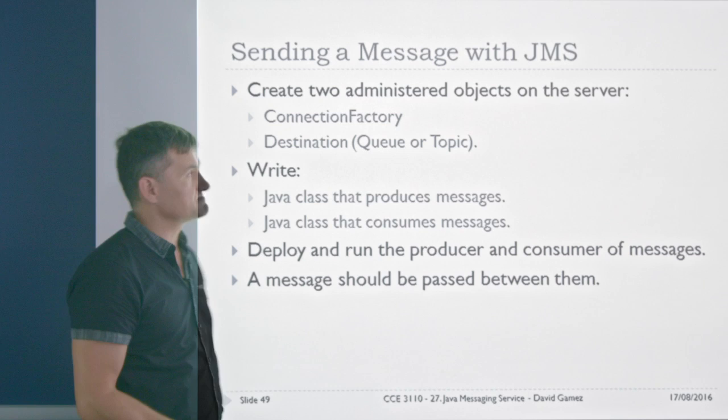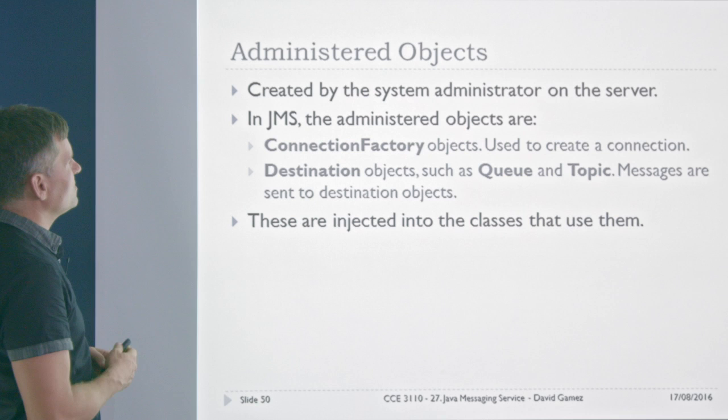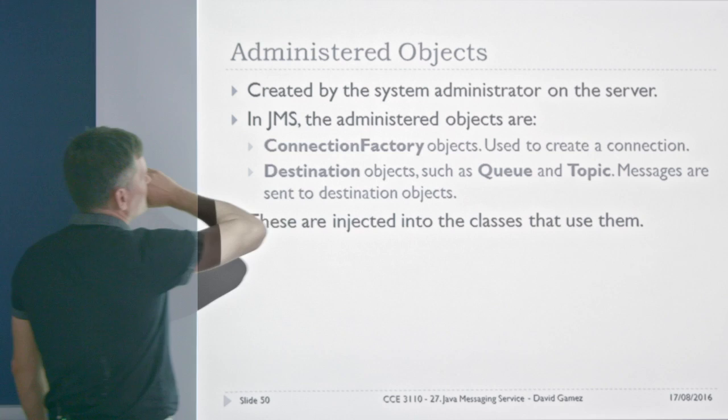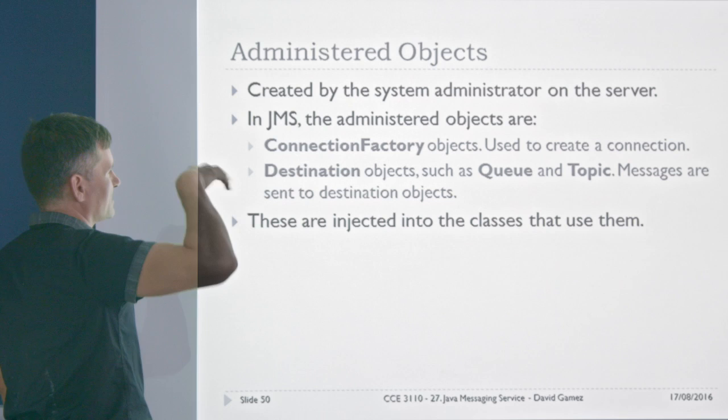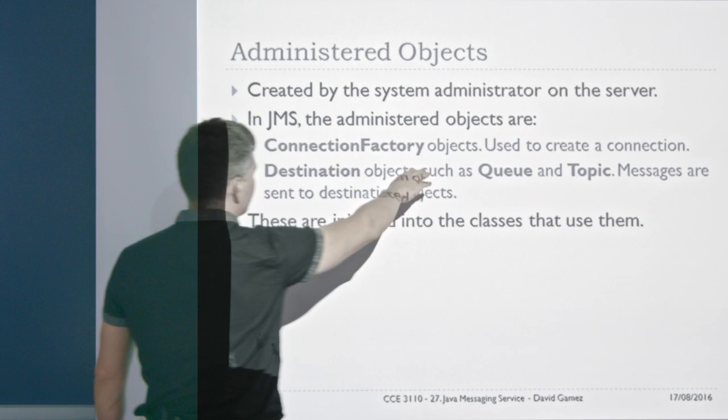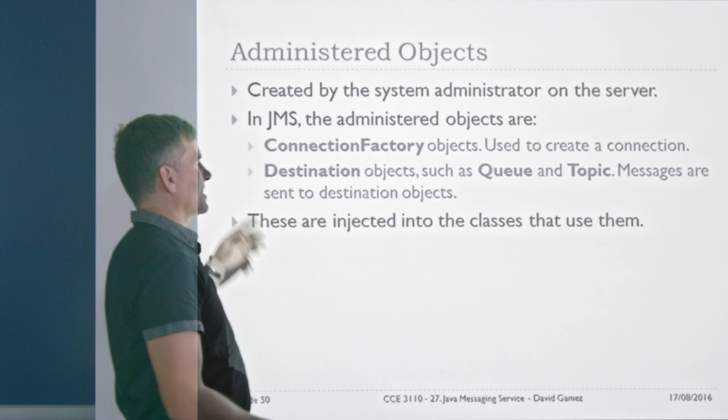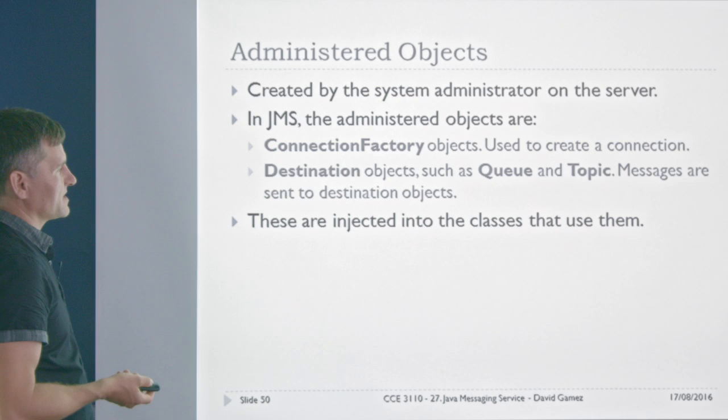The administered objects are new territory and take a little time to get used to. These are objects the system administrator creates on the server — they're Java classes that sit on the server, registered with the Java Naming and Directory Service so they can be injected into the classes that need them. In JMS, the administered objects are the connection factory, used to create a connection, and the destination objects such as Queue and Topic.